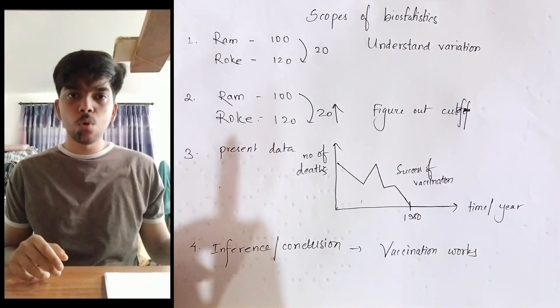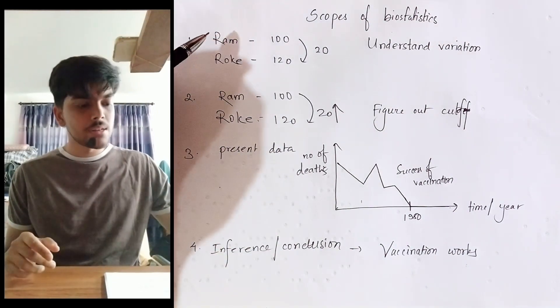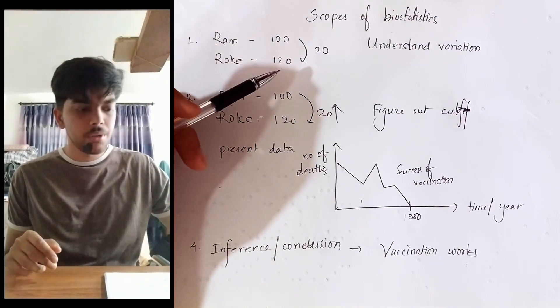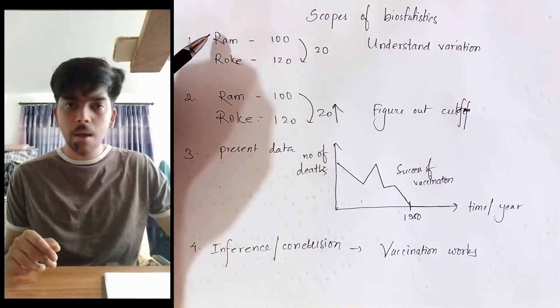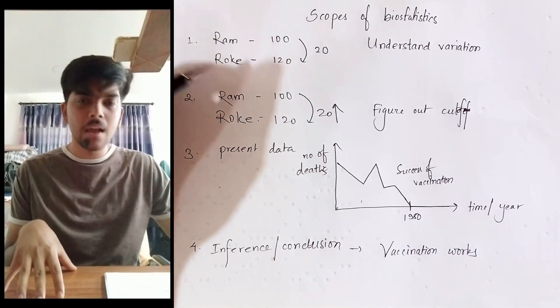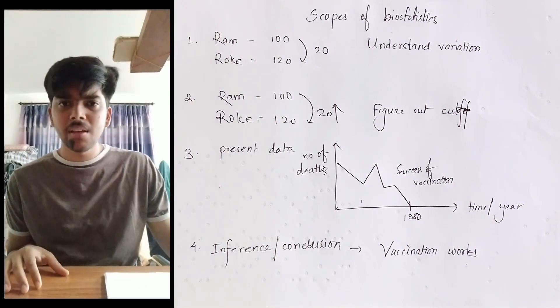Now let's look at the scopes of biostatistics. First, Ram has sugar level fasting 100 and Roke has 120. There's a difference of 20 - that is, there is variation in the sugar level fasting of Ram and Roke. Within human species, there's variation everywhere.